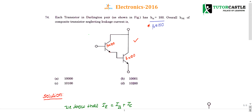In a Darlington pair, the emitter of the first transistor is connected to the base of the second transistor. Both collectors are connected to the same single point. The emitter of the first is connected to the base of the second, and the two bases are not directly connected — they have separate supplies. This is the connection of the Darlington pair.